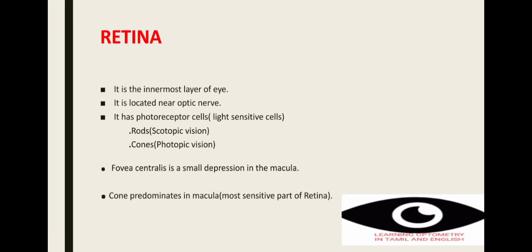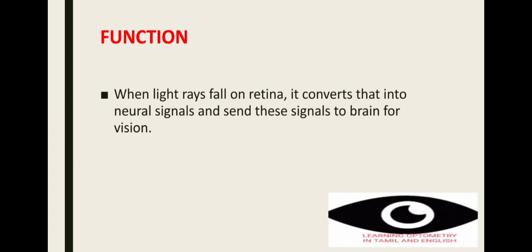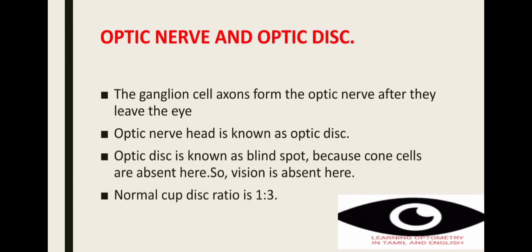Fovea centralis is a small depression in the macula, where cones are predominant — it is the most sensitive part of the retina. When light rays correctly fall on the retina, the retina converts them into neural signals. These signals are sent to the brain for vision.